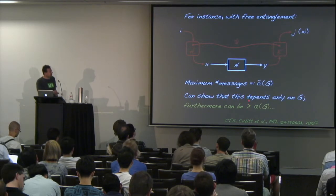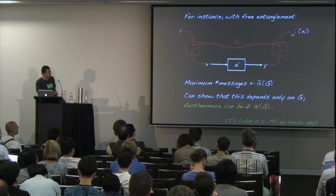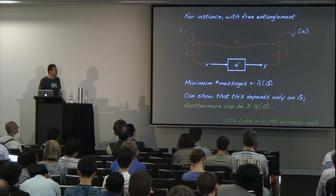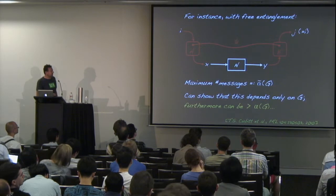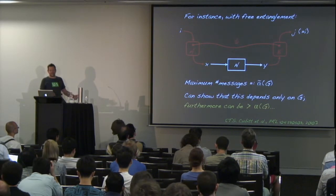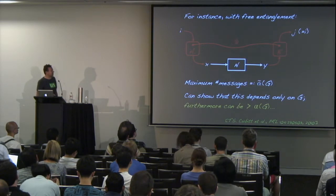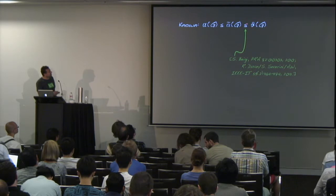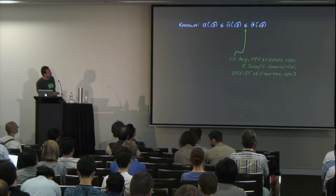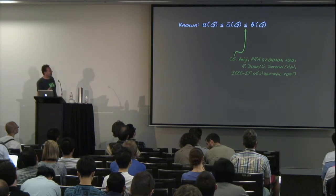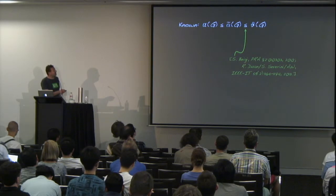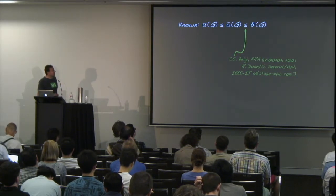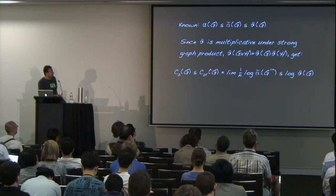With Toby Cubitt and others including people present here (Debbie, Will), we found that the entanglement-assisted independence number can be strictly larger than alpha(G). There is also a non-trivial entanglement-assisted zero-error capacity for many channel uses. Beigi proved that the Lovász theta is an upper bound on the entanglement-assisted independence number, squeezing alpha~ between alpha and theta. Because of multiplicativity, it remains an upper bound on capacity. We know examples of strict separation, though finding more would be desirable; the separation between alpha~ and theta remains open.